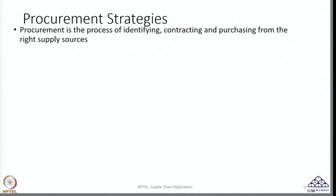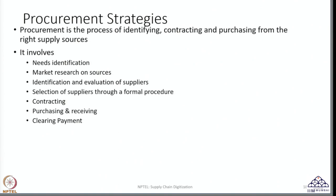Procurement strategies relate to the process of procurement itself — it is a process of identifying, contracting, and purchasing from the right supply sources. Making a good procurement decision is very important because it defines many activities that follow. What kind of material you procure, from whom, and what kind of services you procure will make a difference to what kind of final product or service you create. The first stage in procurement is identifying the need — what materials are required, what quantum, who the internal customers are, and what value and budget is associated.